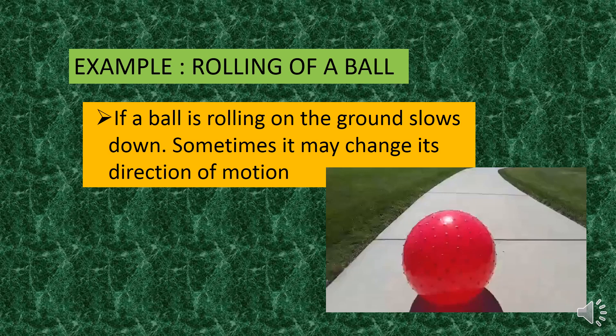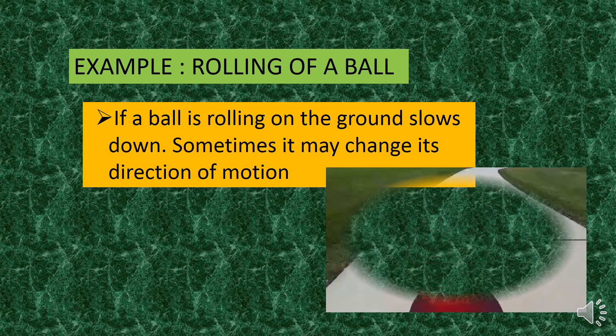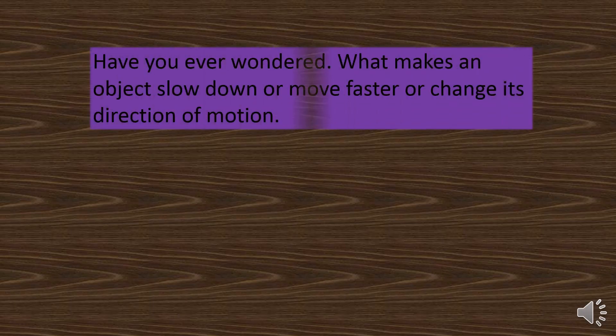You may have these questions. What is the thing behind the ball which is making the ball move faster, slow down, or change its direction of motion? To understand this in a better way, let us take some more examples.